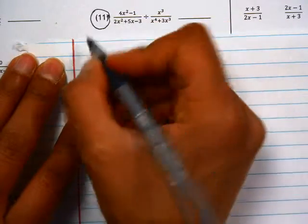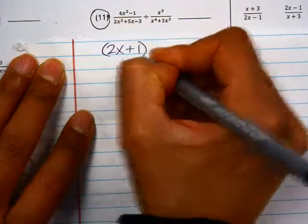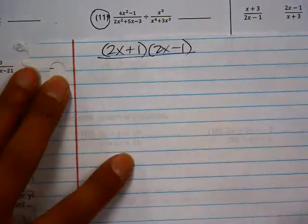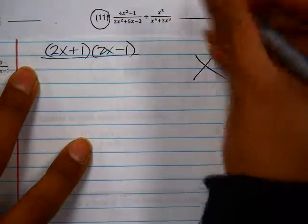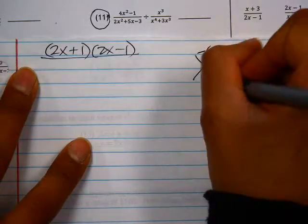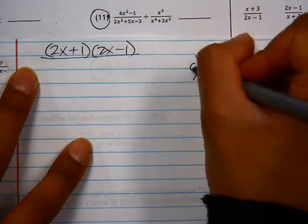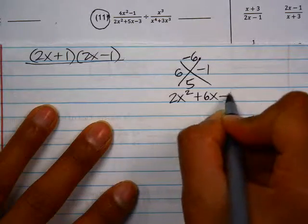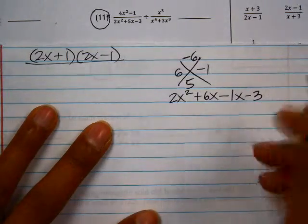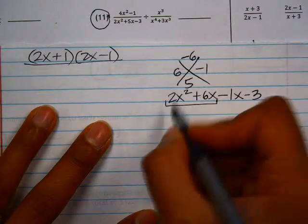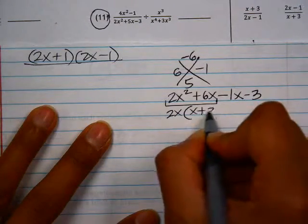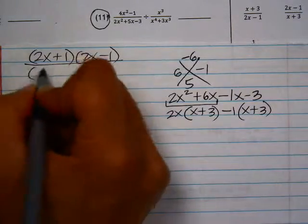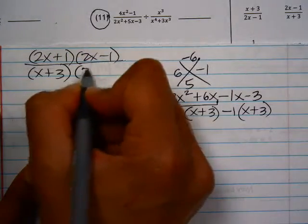So in this case, 4x squared minus 1 is a difference of squares: 2x plus 1, 2x minus 1. 2x squared plus 5x minus 3 is a trinomial. So if we want to factor that, this would have to multiply to negative 6 and add to 5. So this would be 6 times negative 1. And then if we factor by grouping, 2x squared plus 6x minus 1x minus 3 is going to get factored by grouping. So the GCF here is 2x and the GCF here is negative 1. So we have a factor of x plus 3 and a factor of 2x minus 1.